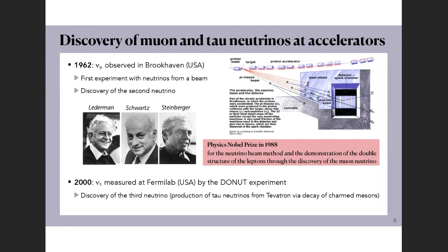Only neutrinos could pass through the wall and arrive at the neon-filled detector called the spark chamber. The impact of the neutrinos on aluminum plates produced muon spark trails that could be detected and photographed, proving the existence of the muon neutrino.